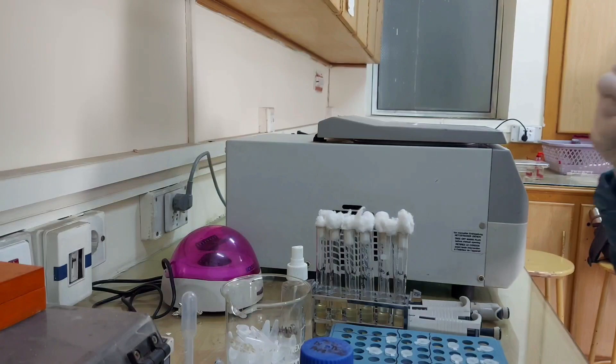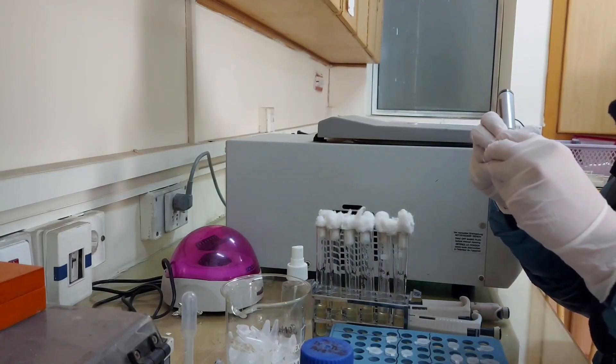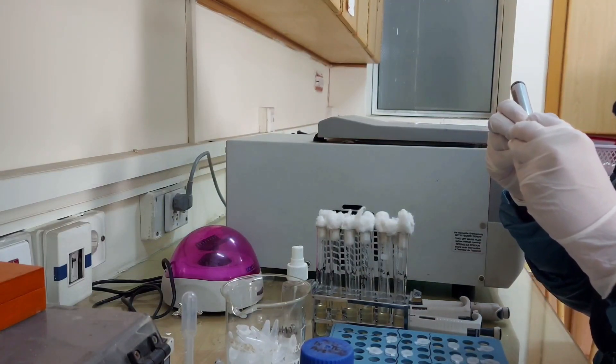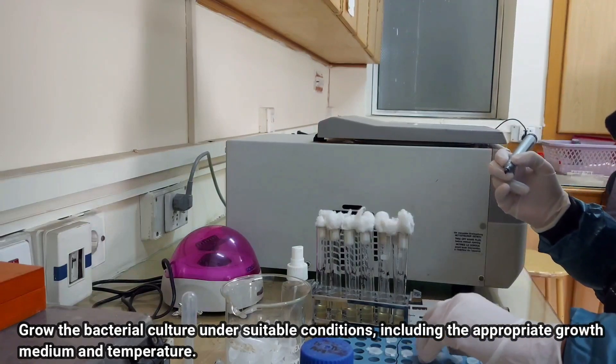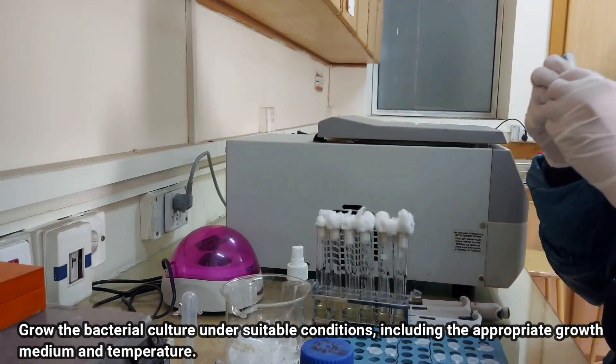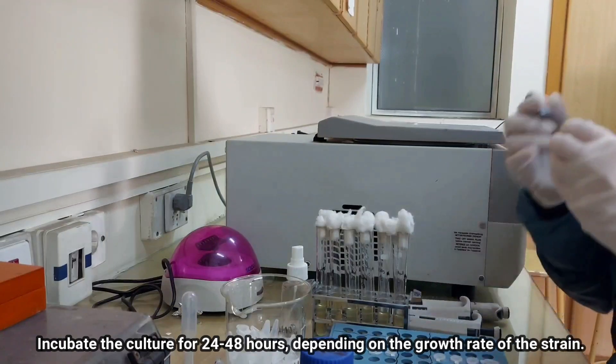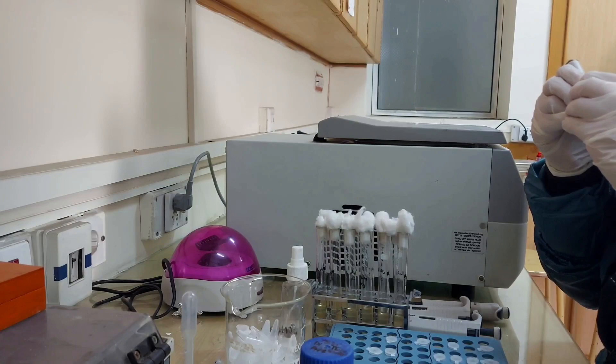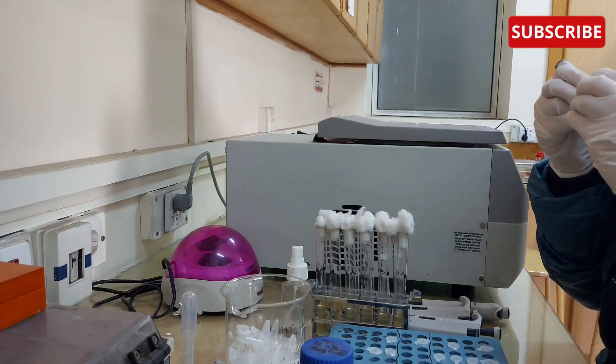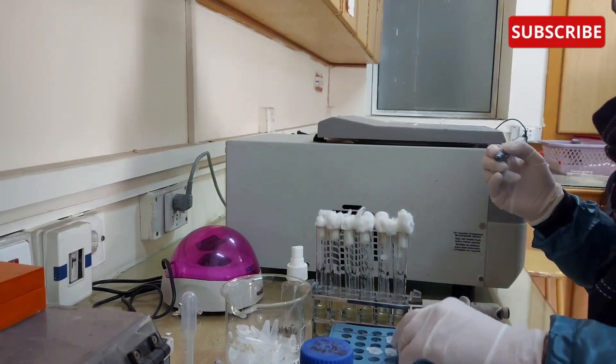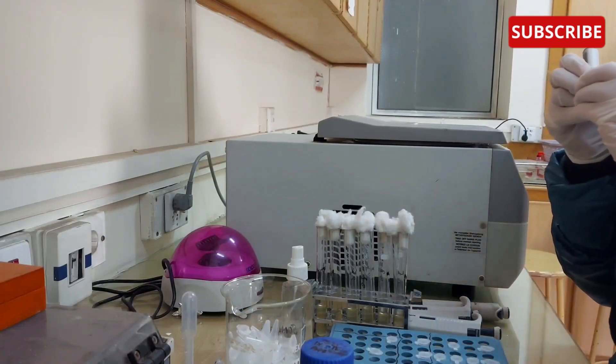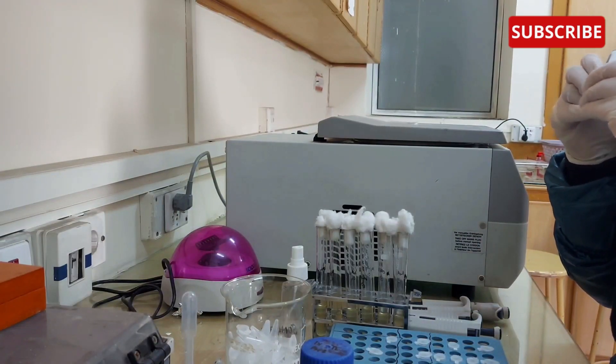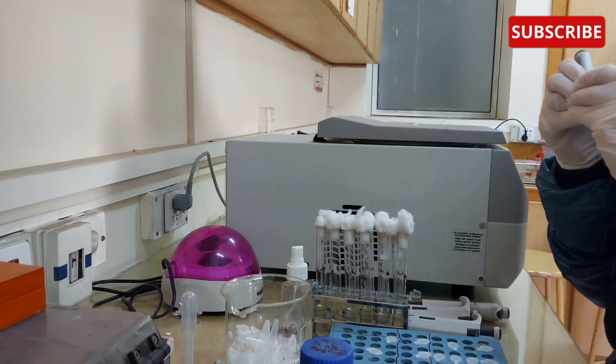I haven't recorded the previous step, but in the test tube, we will add nutrient broth with the help of pipette 5 ml. Then with the help of a sterilized loop, take the pure culture which you have streaked on the nutrient agar and dip your inoculum in the nutrient broth in the respective test tubes. After incubation, you will get your bacterial growth in the nutrient broth.